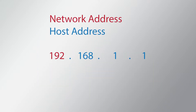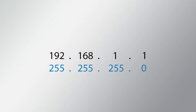The IP address has two parts: the network address and the host address. In this example, the network address is shown in red and the host address is shown in blue. The network address can be composed of the first octet, the first two octets, or the first three octets.